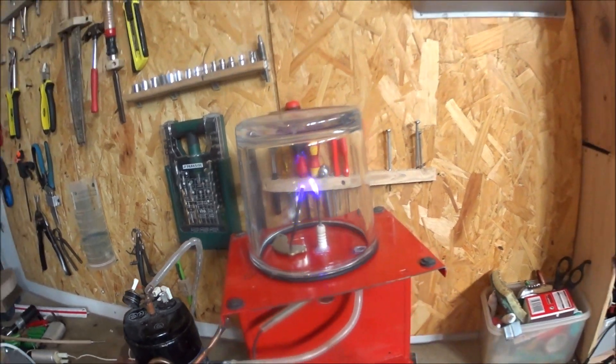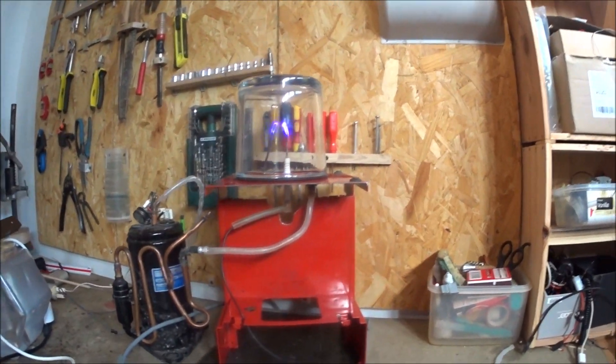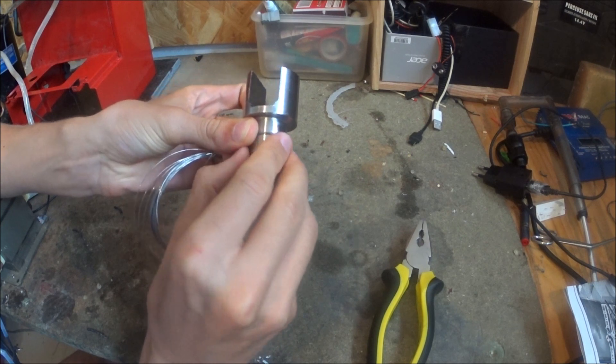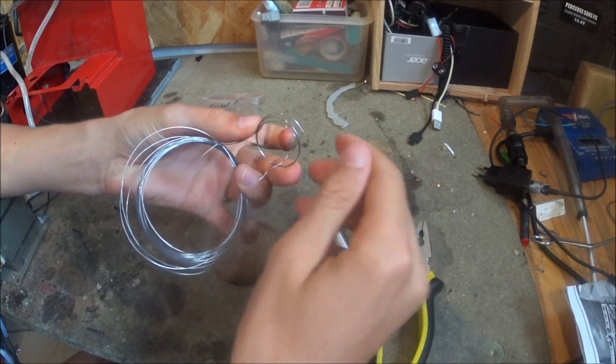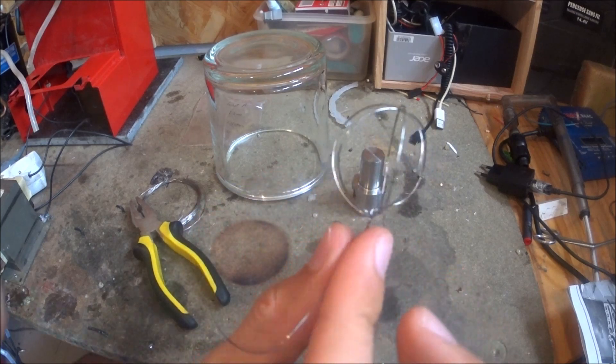Well that looks promising. Now I need to make an actual grid. For the inner grid I used some nichrome wire that I wrapped into a coil, then formed into a sphere like this.